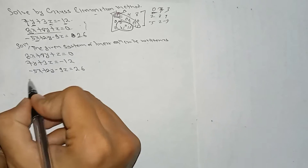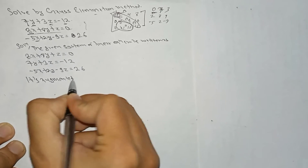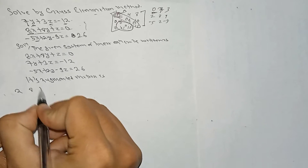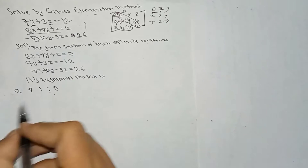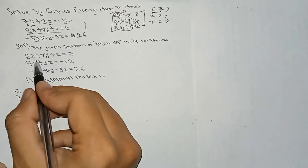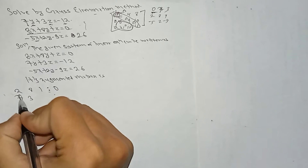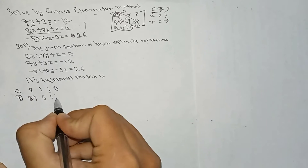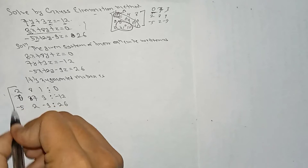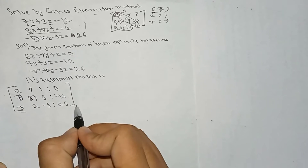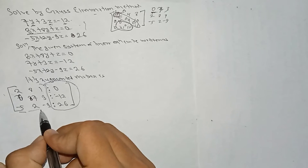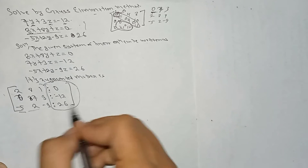In this problem, we have 2 in the leading diagonal position. The augmented matrix is: 2, 8, 1, 0 — and notice this is the augmented matrix. It is: 0, 7, 3, minus 12; minus 5, 2, minus 9, 26. Always remember, this whole part is the augmented matrix, and by removing the last column we get the coefficient matrix.